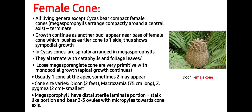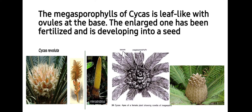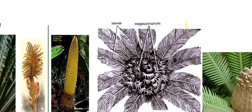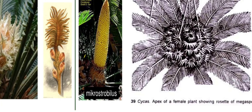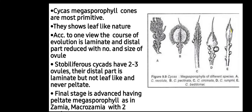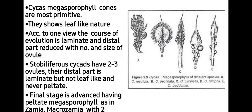Megasporophylls have a distal stiped laminate portion plus a stalk-like portion and bear 2 to 3 ovules with micropyles toward the cone axis. The megasporophyll of Cycas is leaf-like with ovules at the base; the last one has been fertilized and is developing into a seed. So you can see here the loosely arranged female cone of Cycas. You can clearly see that ovules are present at the base of the megasporophyll. Cycas megasporophyll cones are the most primitive and show leaf-like nature.